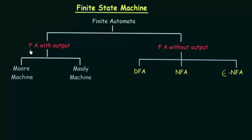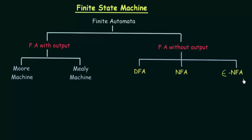In finite automata with output we have two categories: Moore machine and Mealy machine. In finite automata without output we have three categories: deterministic finite automata or DFA, non-deterministic finite automata or NFA, and epsilon non-deterministic finite automata or epsilon NFA.